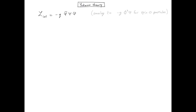Because we have three fields here, the vertex will only connect three lines and not four like in the phi-4 theory. And one of these lines is a boson, a scalar boson, while two of these lines have to be fermions.